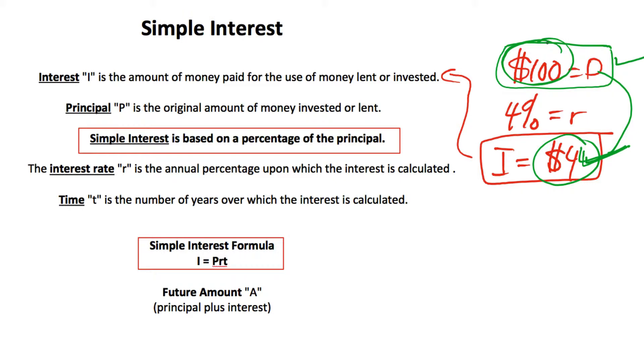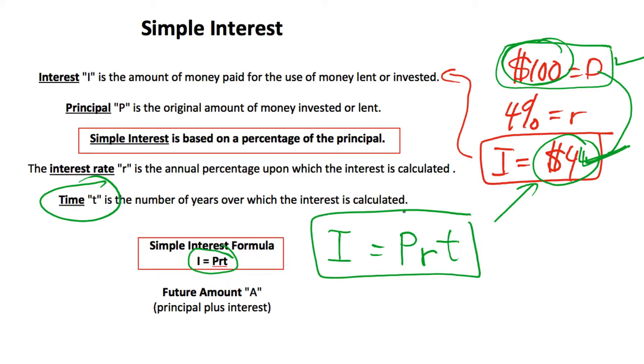And in terms of simple interest, which is what we're talking about today, our formula then is just taking our principal, multiplying by our rate, which is what we did in the example above, and that gives us the interest for one year. And if we want the interest for t years, t being in years, then we got to multiply that by t. And here's our formula for simple interest, I equals P times r times t.